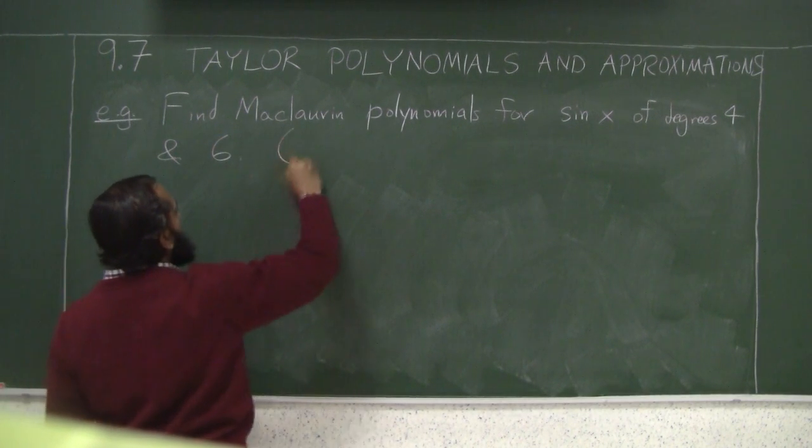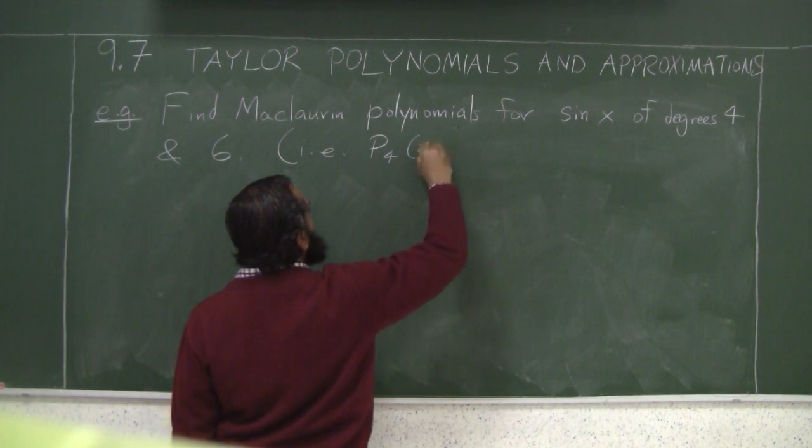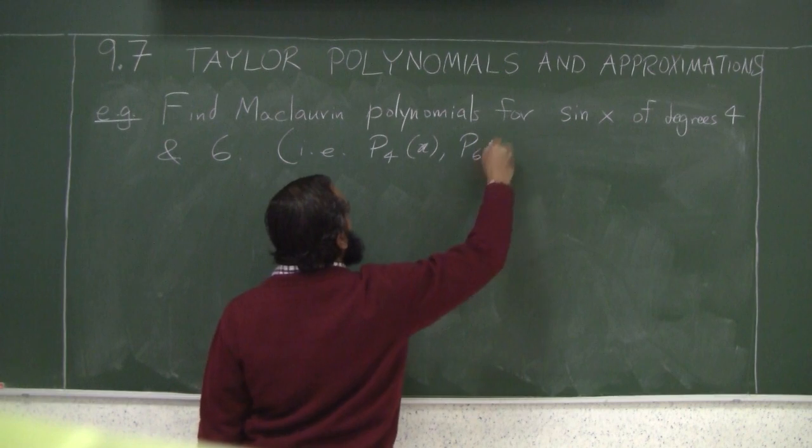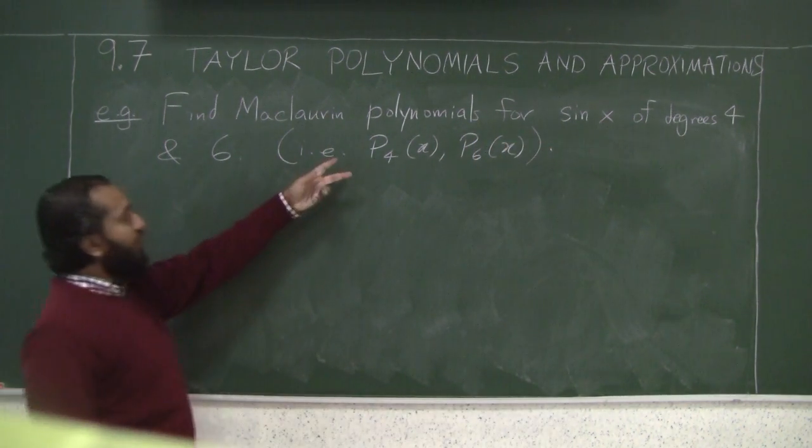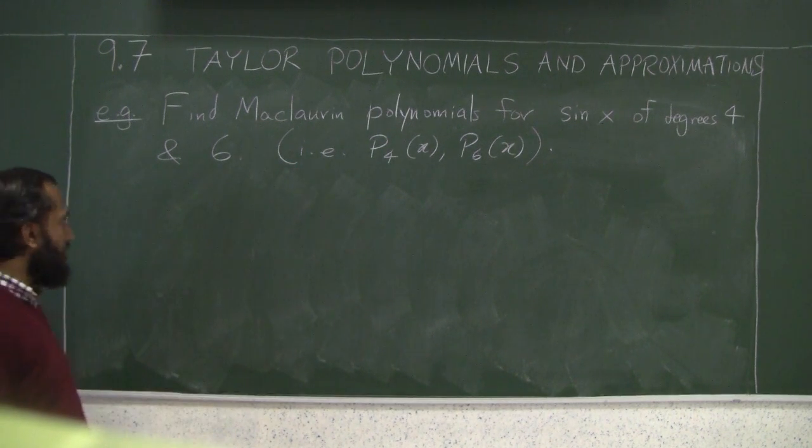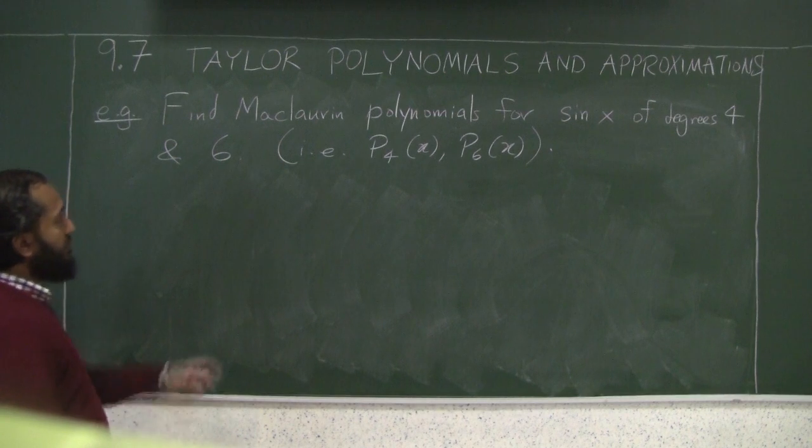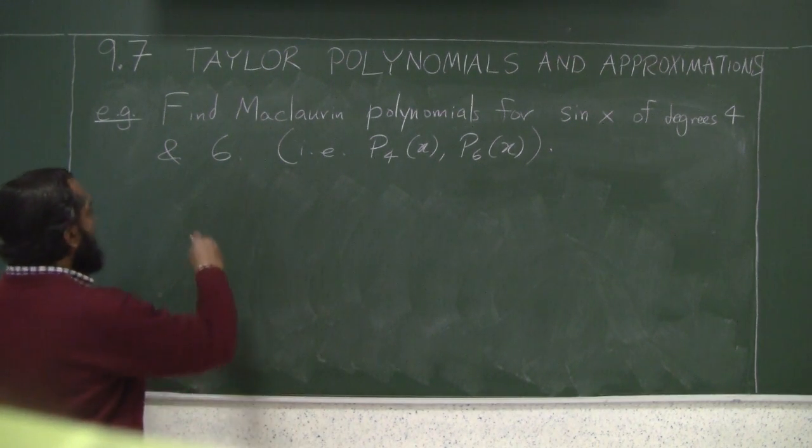So in our notation, that will be P4 and P6, and since we are being told Maclaurin polynomials, c is 0. So because we need to take the derivatives to this degree, let's go ahead and write this down for ourselves.